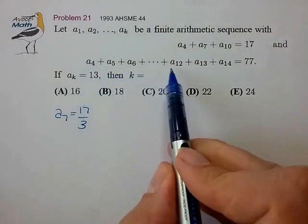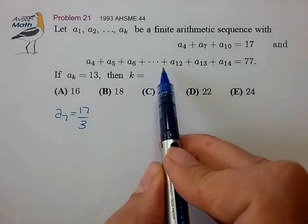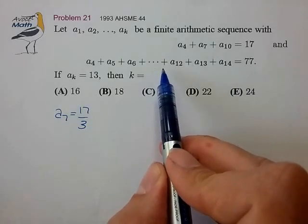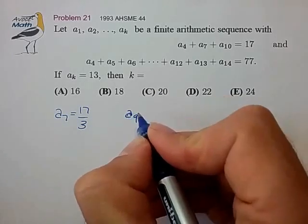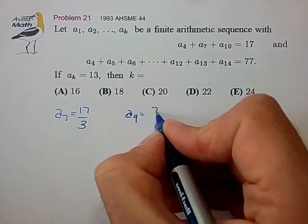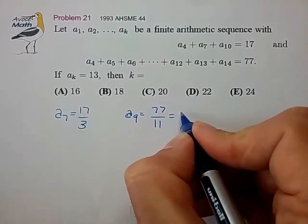Now this second set of 11 terms is also symmetric about the center term of A9 from which we quickly find that A9 is equal to 77 divided by 11 which is equal to 7.